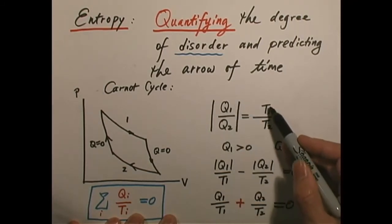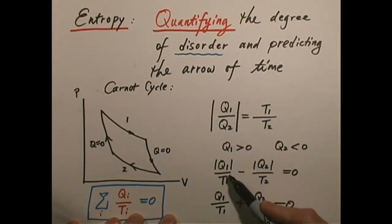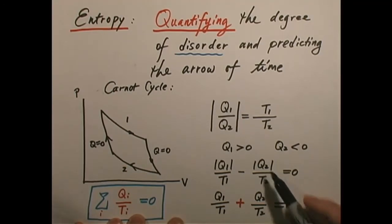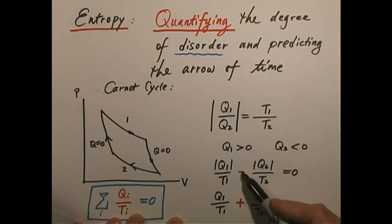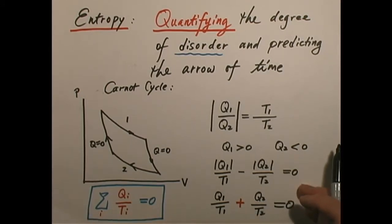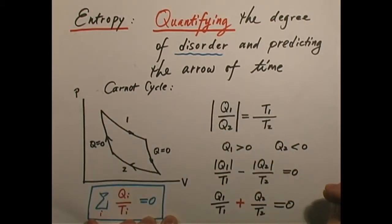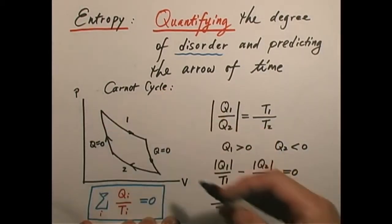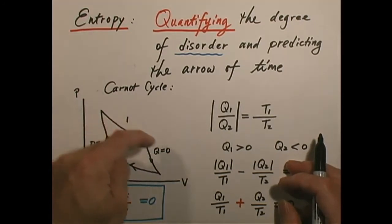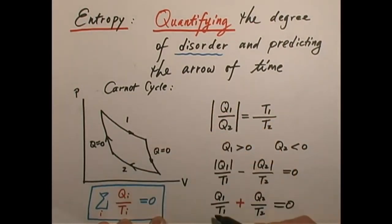We can rewrite this expression by dividing both sides by T1 and rearranging. You get q1 over T1 minus q2 over T2 equals zero — these are absolute values. Since q1 is greater than zero and q2 is less than zero, we can remove the absolute signs. The other two processes — the adiabatic steps — don't involve any transfer of heat, so the sum of q over T for all four steps of the Carnot cycle equals zero.